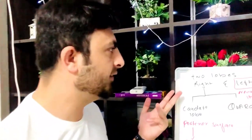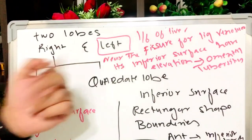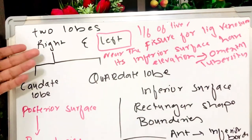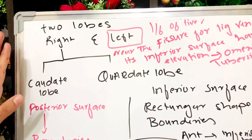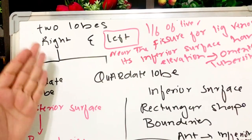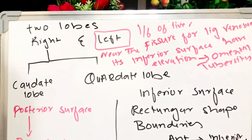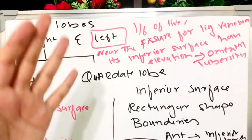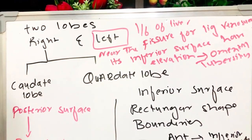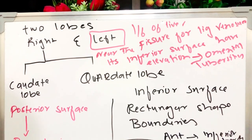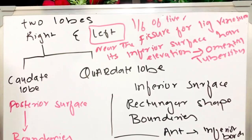The right lobe is bigger in size, almost 80 to 85 percent of the liver, while the left lobe is only one-sixth of the liver. The left lobe lies near the fissure for the ligamentum venosum, and its inferior surface has an elevation which is called the omental tuberosity.